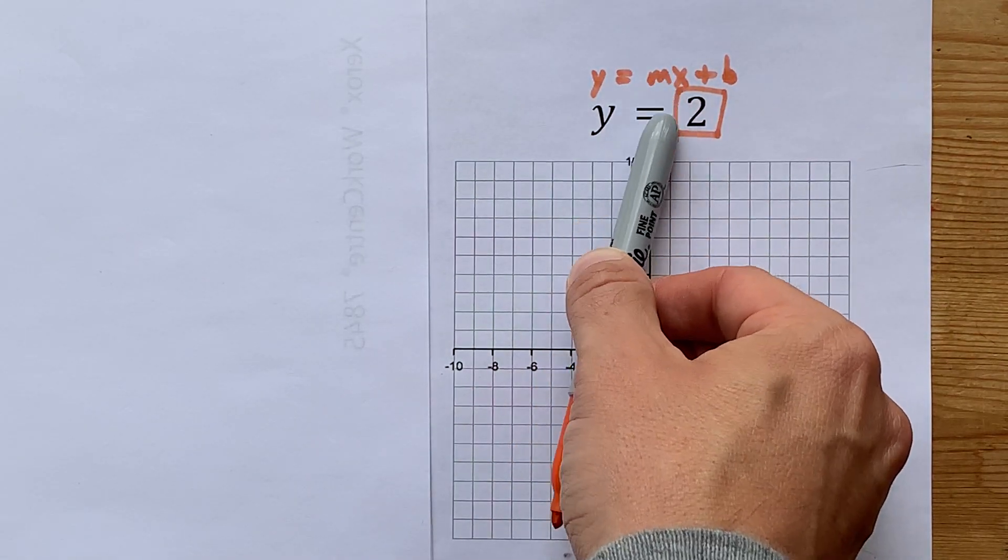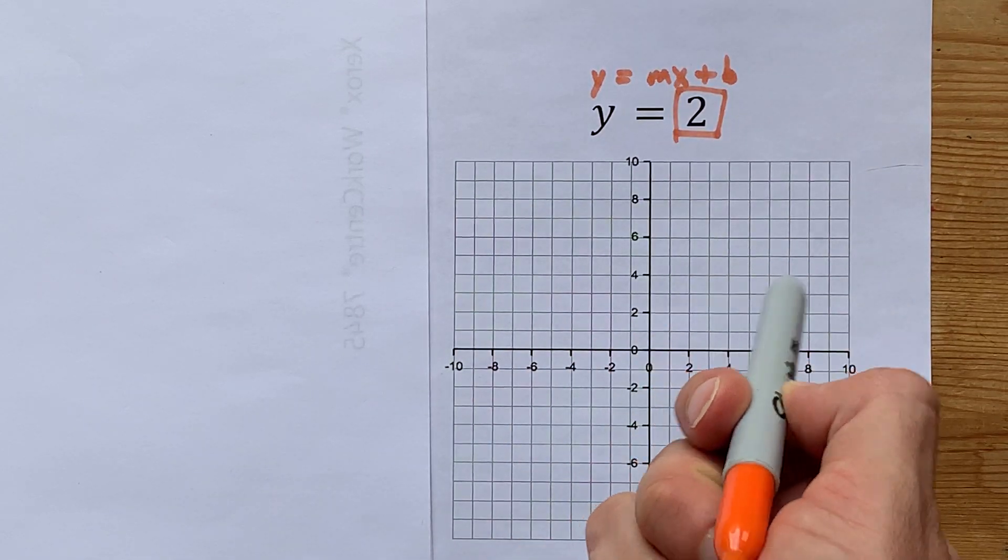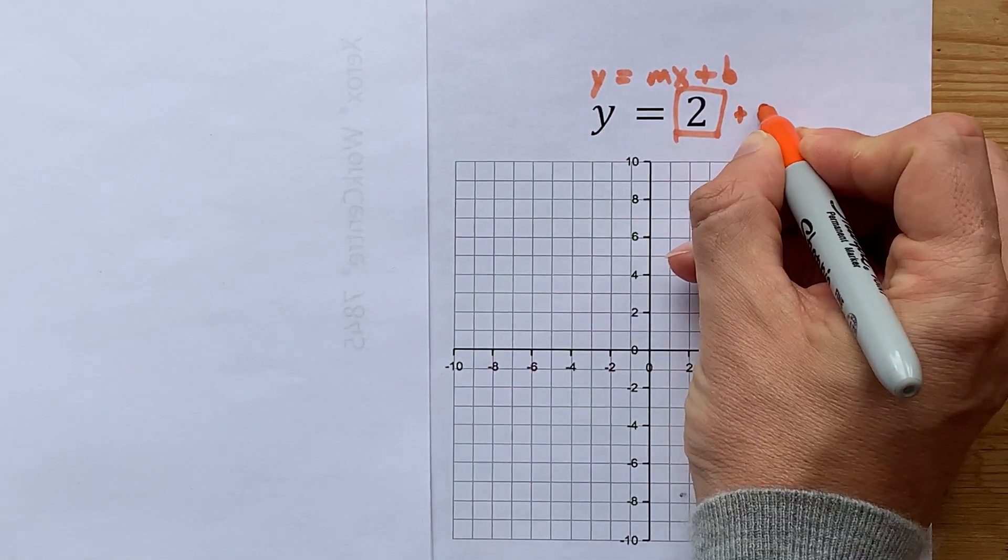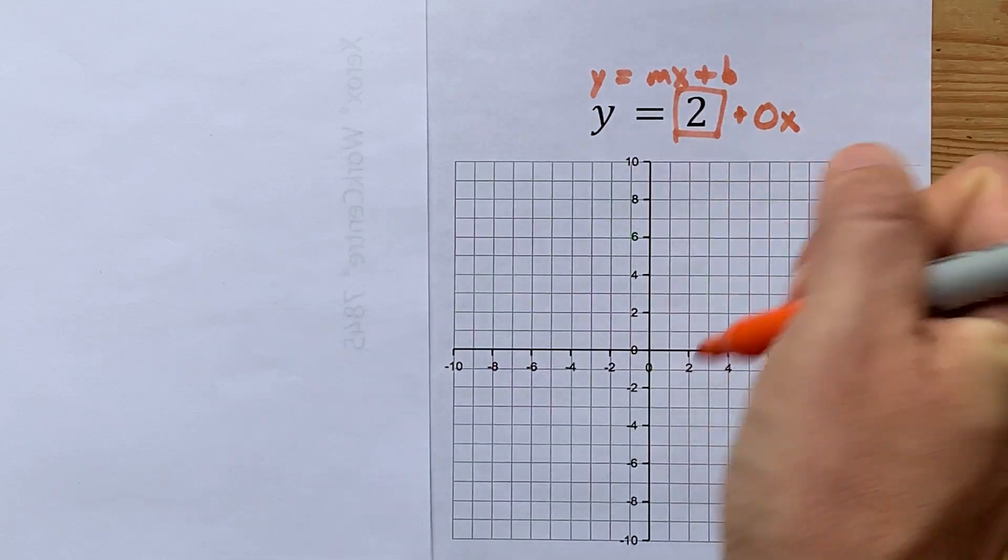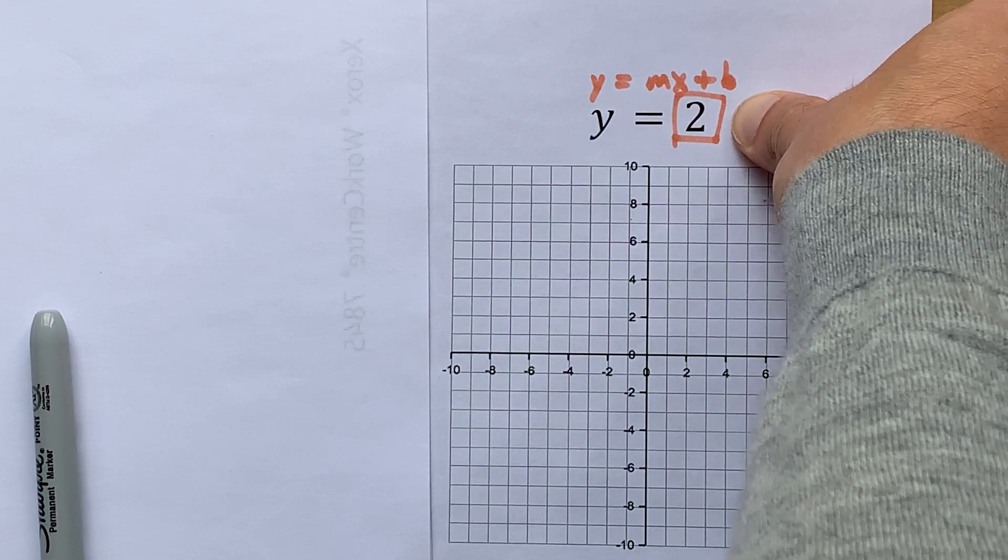And the slope m is the number that's in front of x. Well, I don't have an x here, and that's because the coefficient on x is 0. 0 times anything is 0, so why would you even bother writing it?